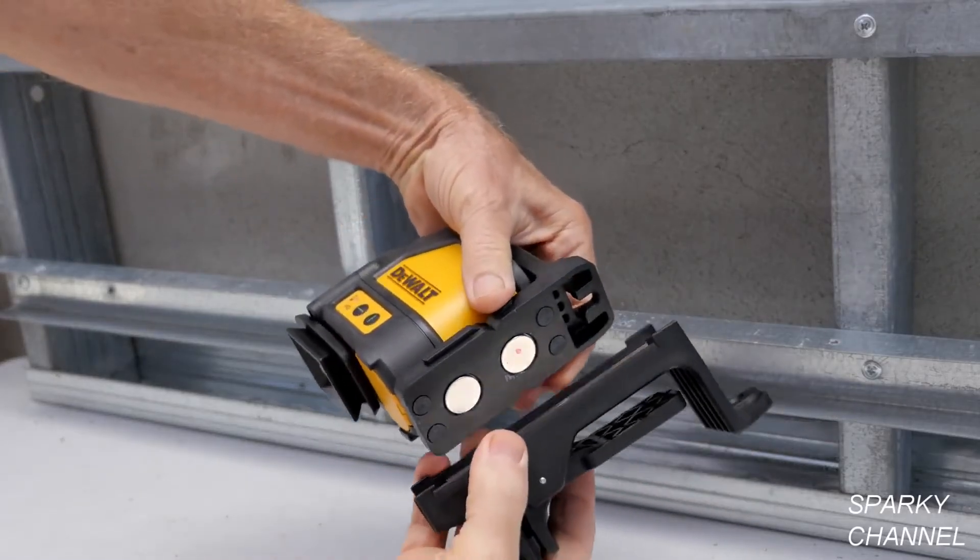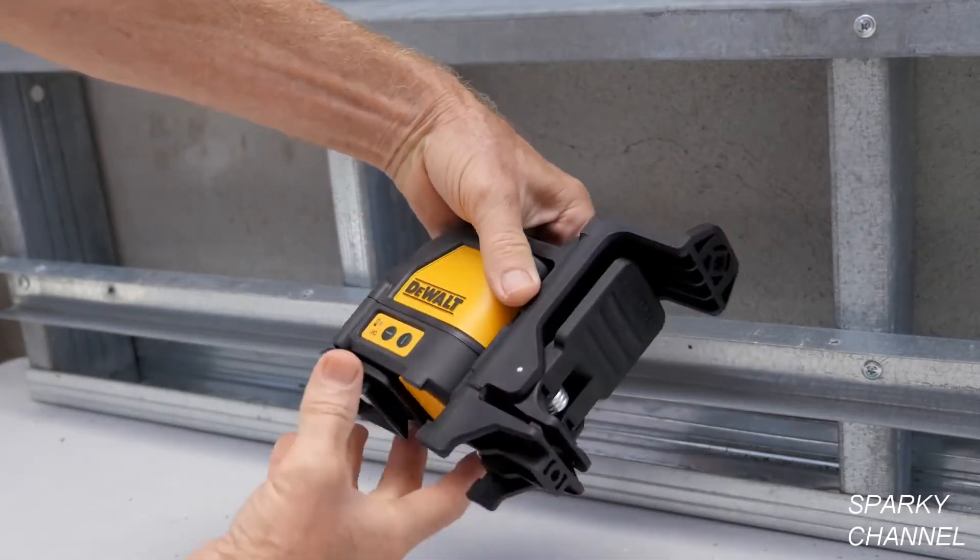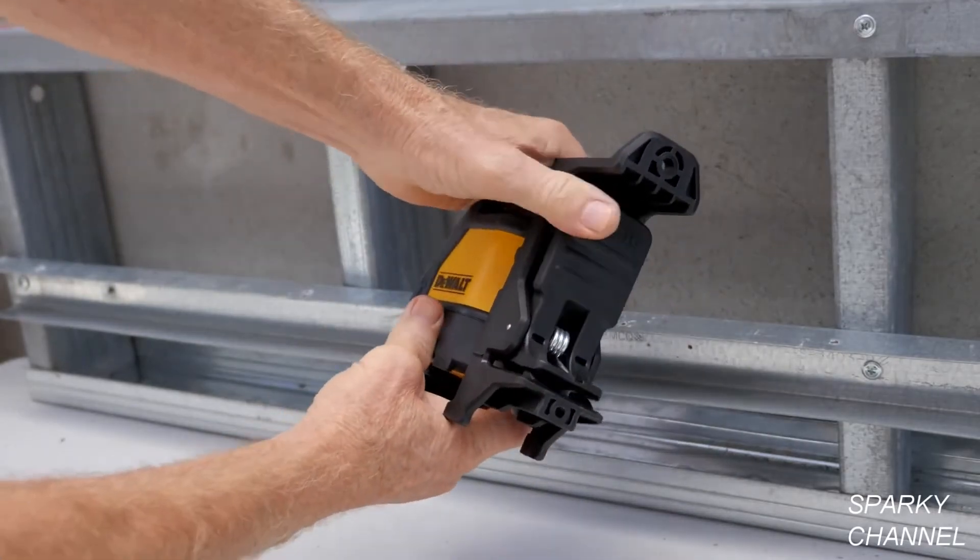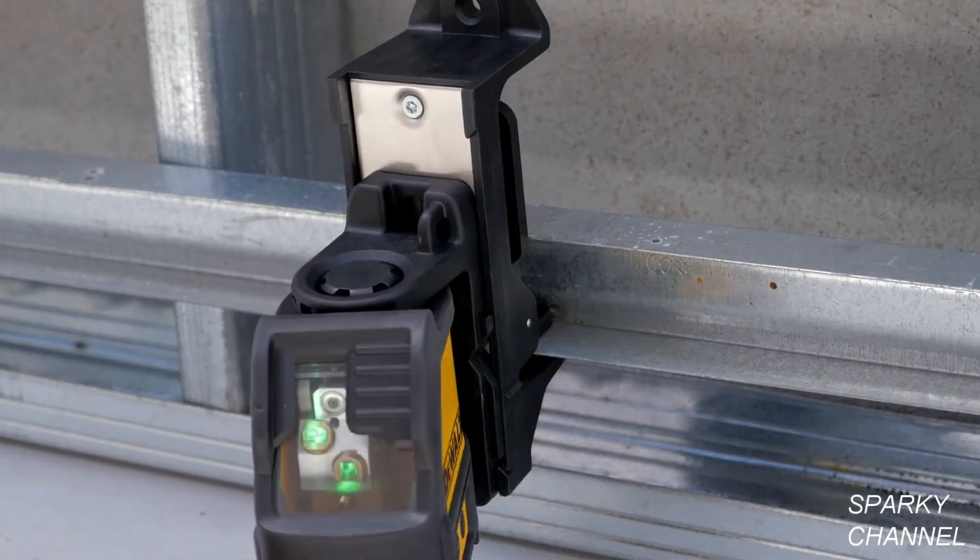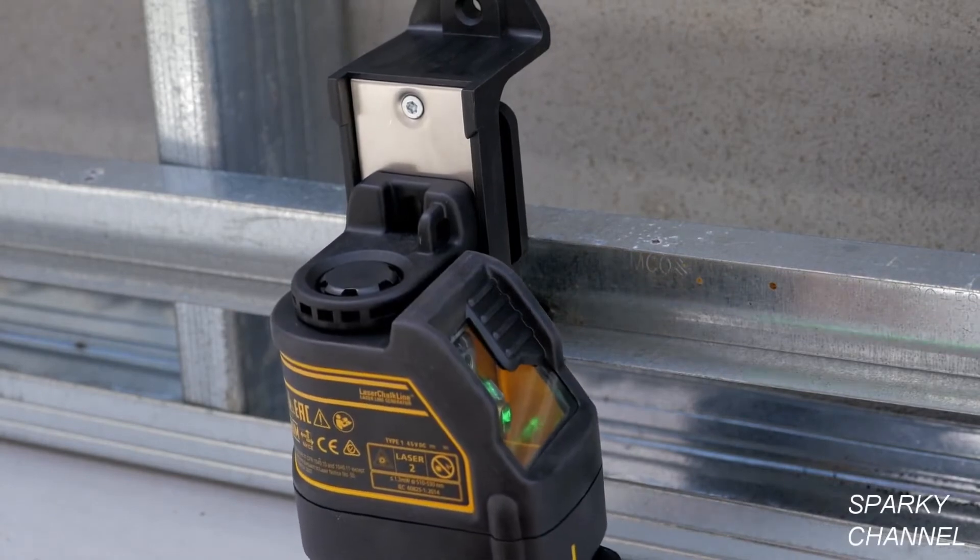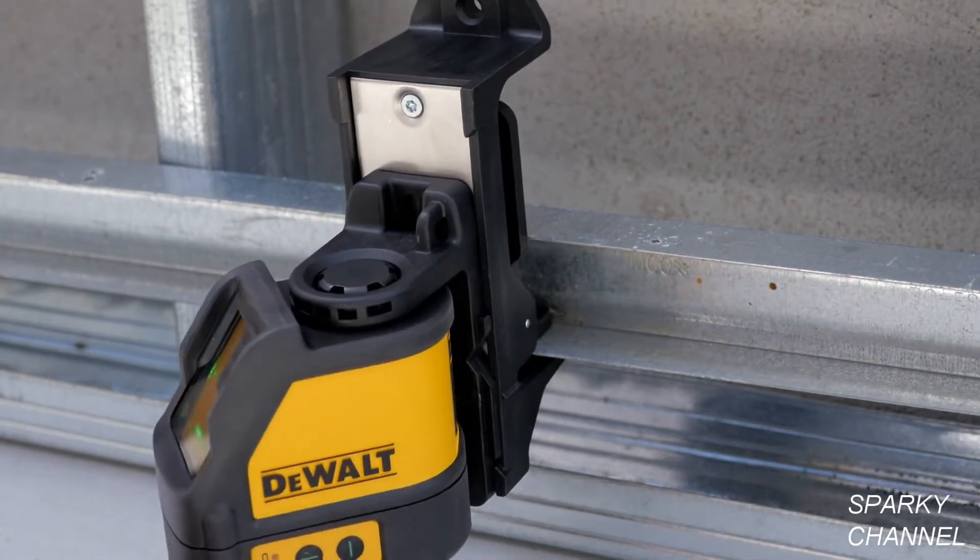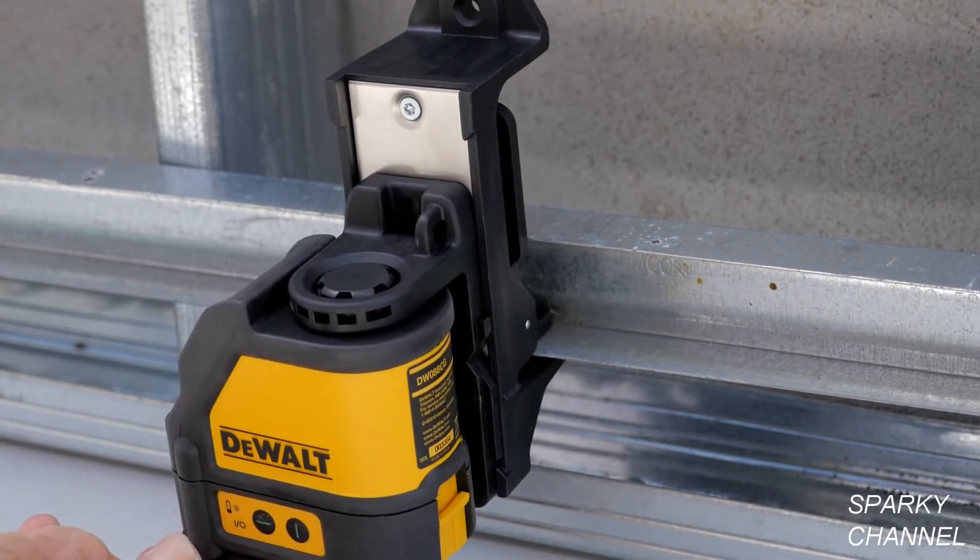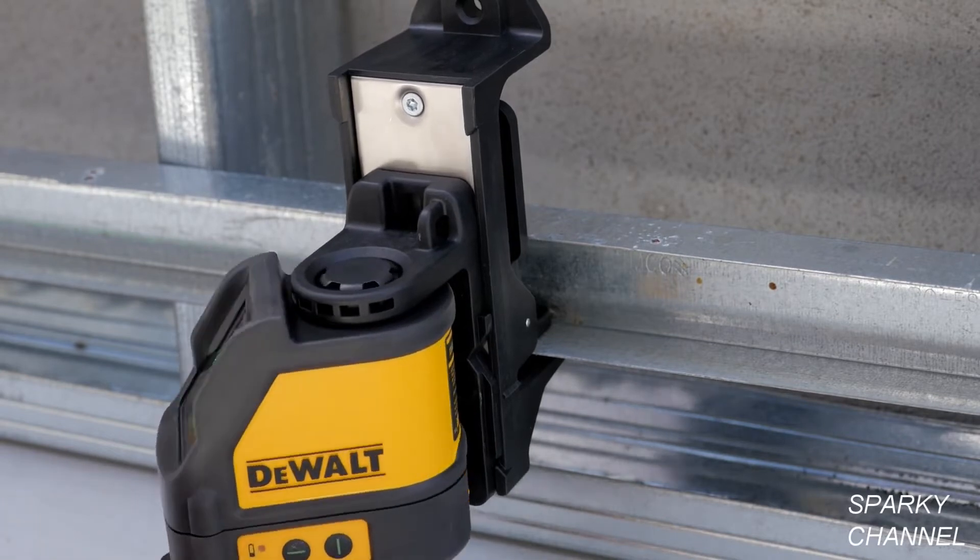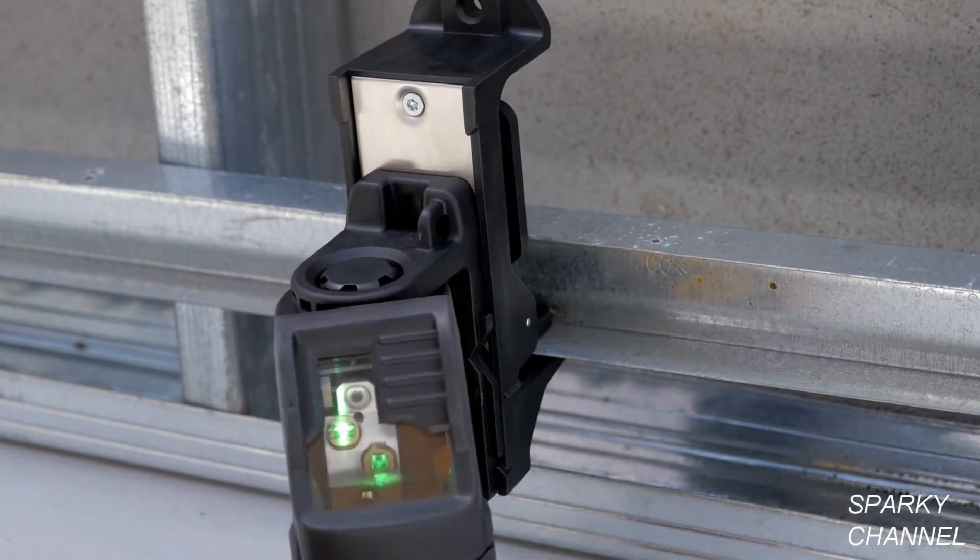You can also use the included clamp which attaches magnetically to the laser. Once you have attached the laser, either directly with the magnets or with the clamp, the laser has an integrated hinge which allows it to swivel so that you can put it in just the right position.